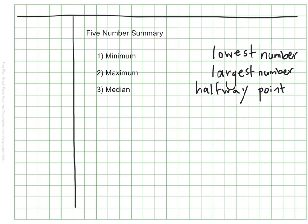The last two parts are the upper and lower quartiles. We worked with the lower and upper quartiles in our last video, so be sure to review that video at any time if you need a reminder. Let's take a minute to look at the five-number summary for a set of data and then see how we use that to represent it with a box and whisker plot.